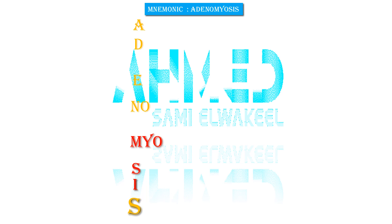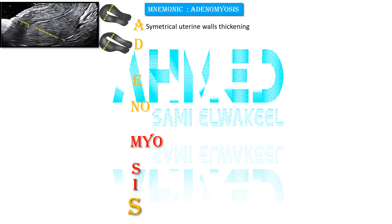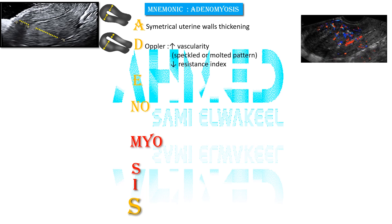Now, adenomyosis features on ultrasound. The mnemonic is ADENOMYOSIS. A stands for asymmetrical uterine wall thickening. D stands for Doppler — increased vascularity in a speckled or stippled pattern, with decreased resistance index.